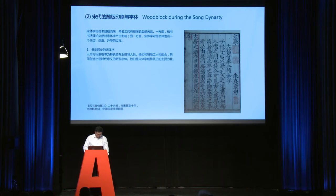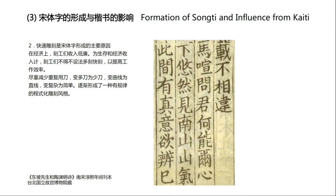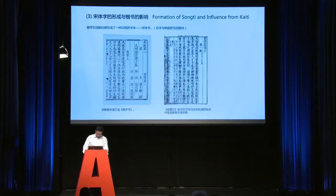The formation of Song-ti involved two factors: first, the cooperation between book writers and cutters; and second, the rapid curves as a structural reason for the formation of Song-ti. Then in the Ming dynasty, a new typeface matured — it's named Song-ti, called Ming-chao-ti in Japan and in Korean sources.